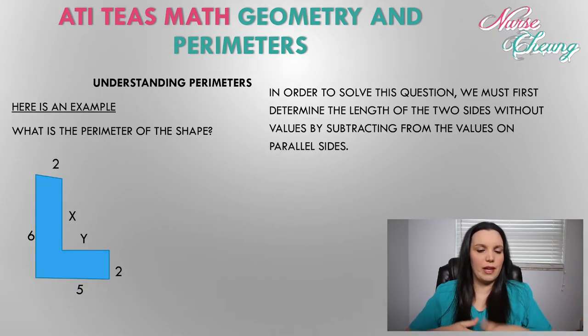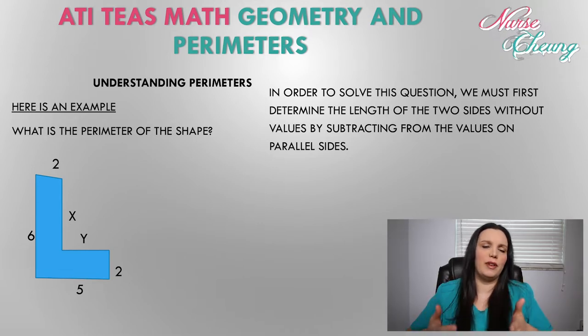Let's take a look at the perimeter of this shape. We have an L shape perimeter here. However, we have two missing values, x and y. In order to determine the perimeter of this shape, we need to determine what the missing values are of x and y. How do we do that? Let's figure that out.